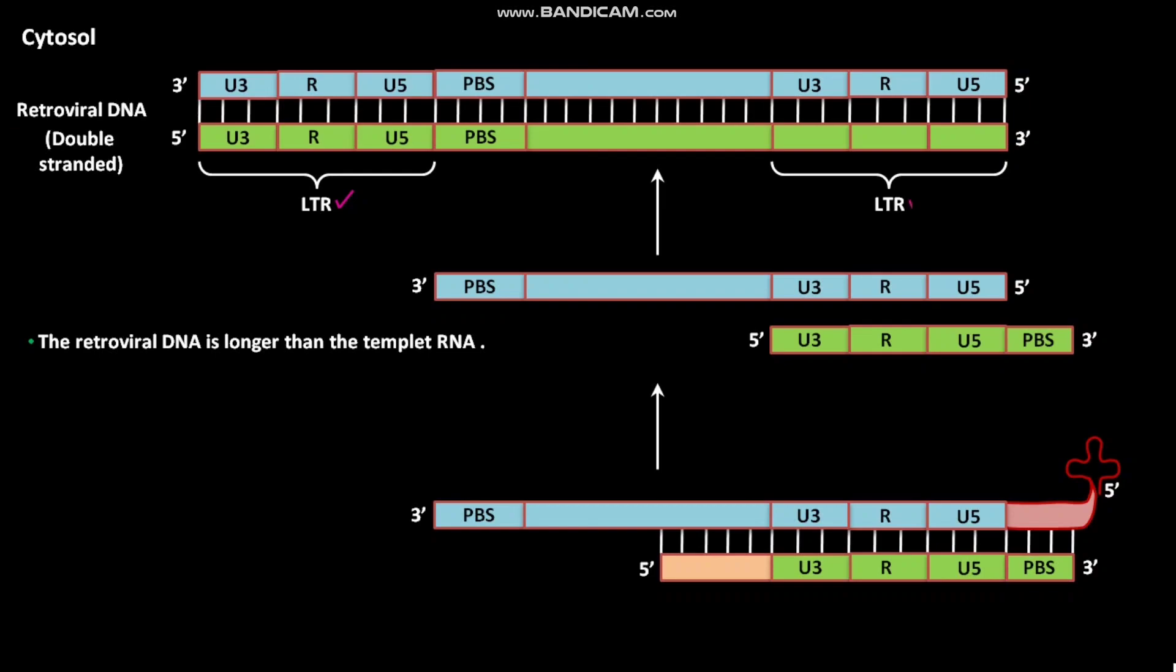The complete 3' LTR functions as a polyadenylation signal leading to polyadenylation precisely at the 3' nucleotide of the R sequence. As a result, no nucleotides are lost from an LTR retrotransposon as it undergoes successive rounds of insertion, transcription, reverse transcription, and reinsertion at a new site.